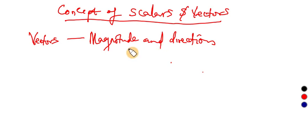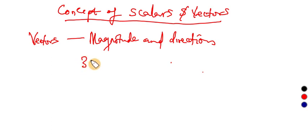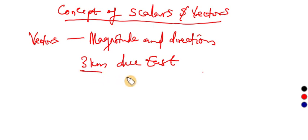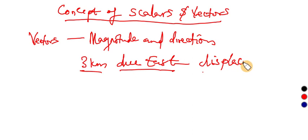How do we describe vectors? For instance, displacement of an object: if I say that a man travels 3 kilometers to the east, I have made mention of both the magnitude and the direction. So displacement has magnitude as well as direction, and it is therefore a vector quantity.